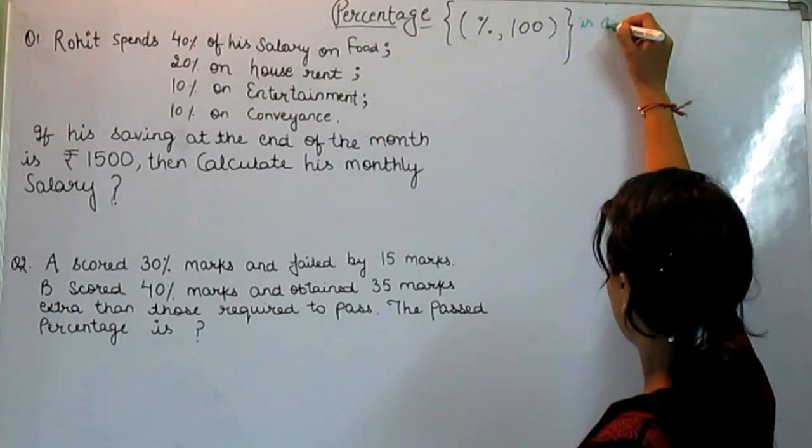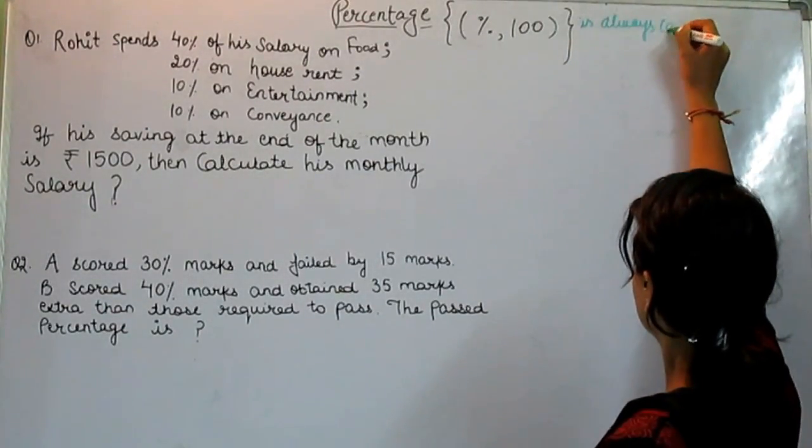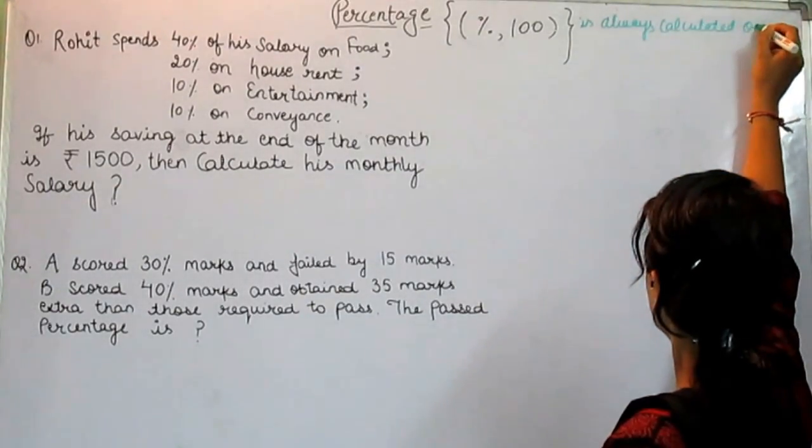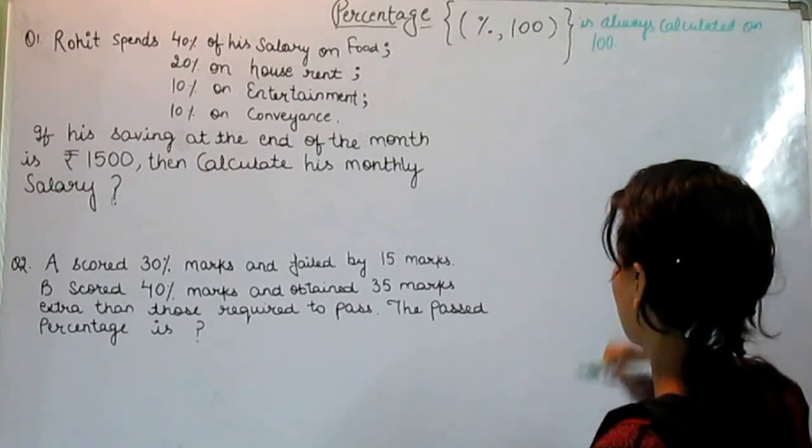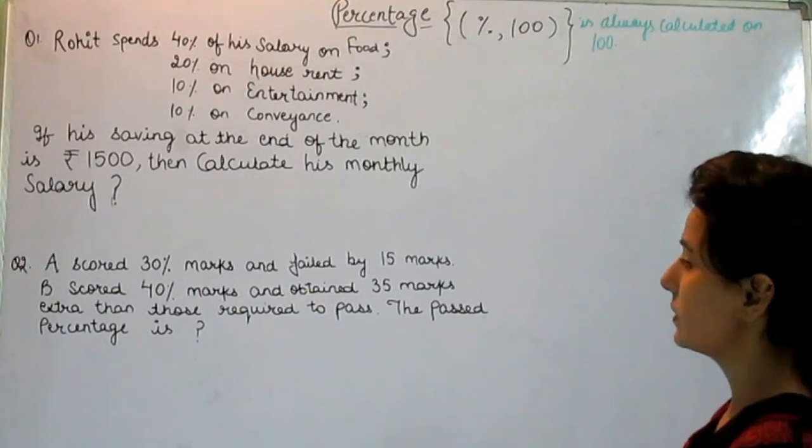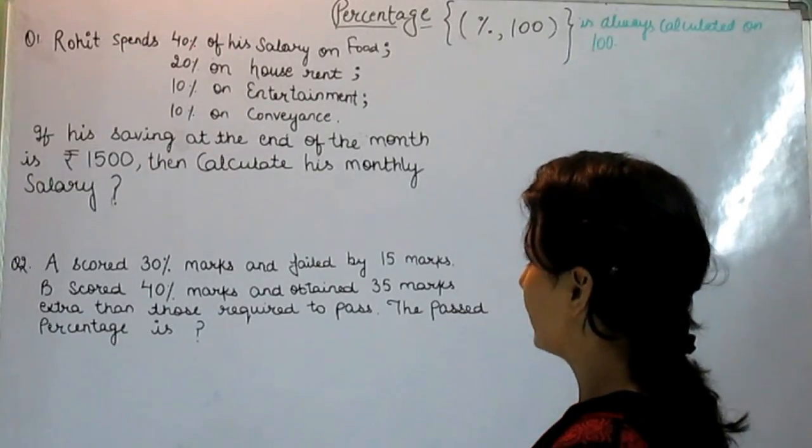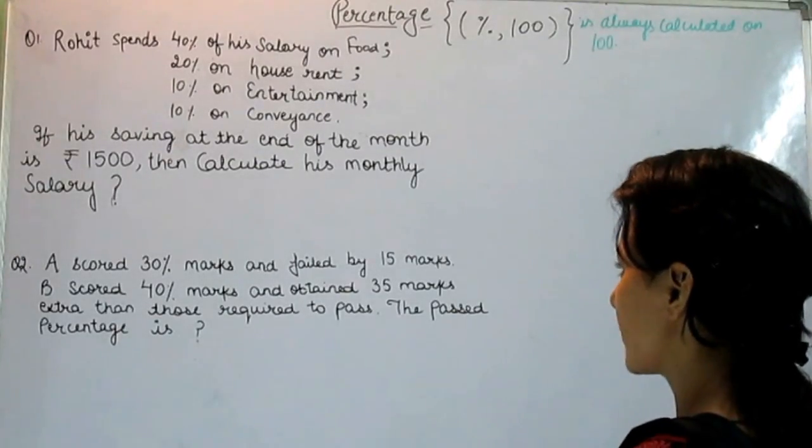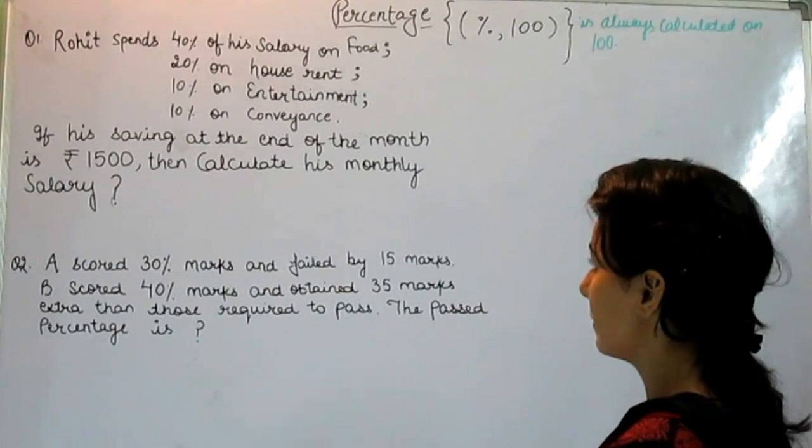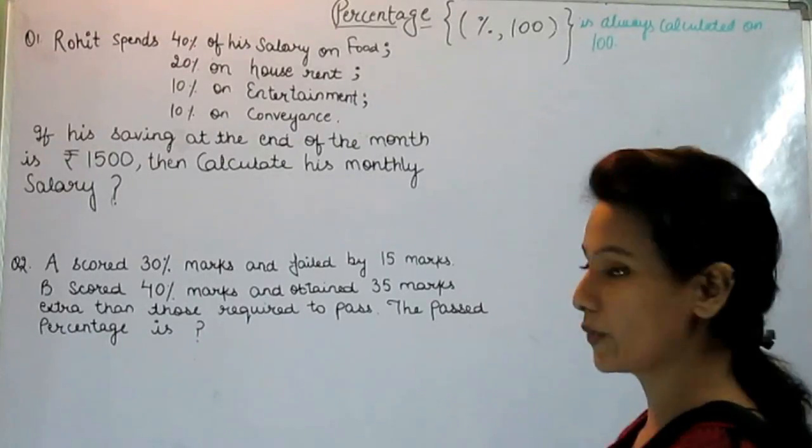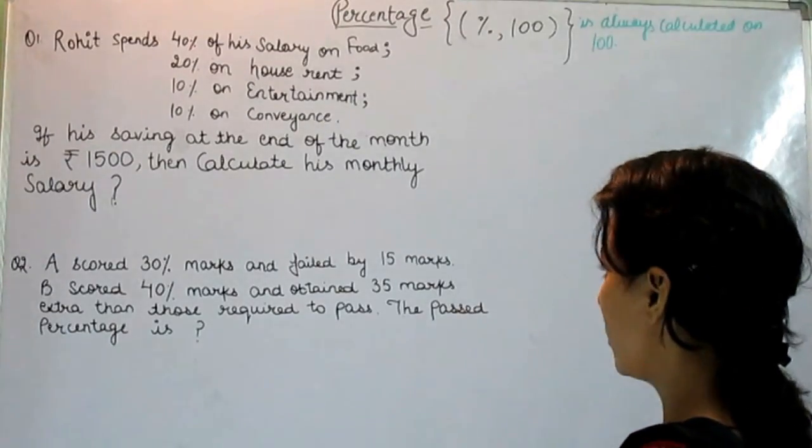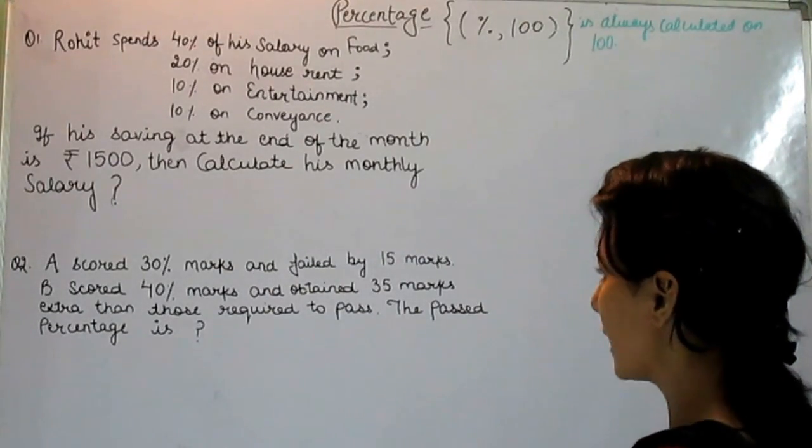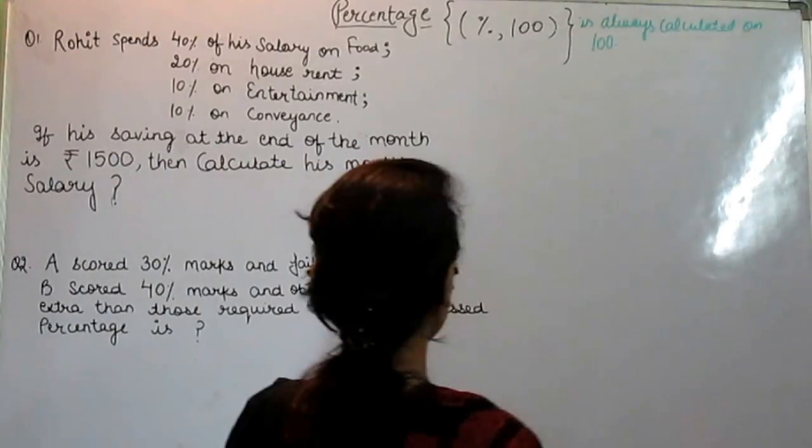Percentage is always calculated on 100. So let's start with the first question. Rohit spends 40 percent of his salary on food, 20 percent on house rent, 10 percent on entertainment, 10 percent on conveyance. If his saving at the end of the month is rupees 1500, then calculate his monthly salary.